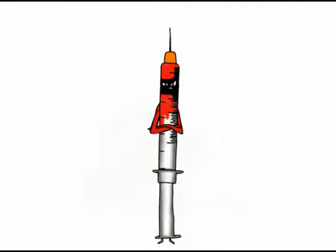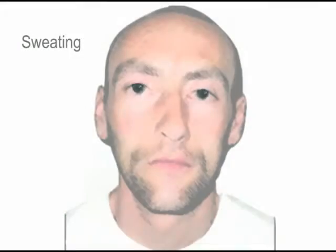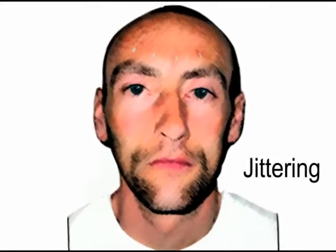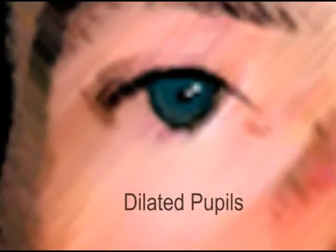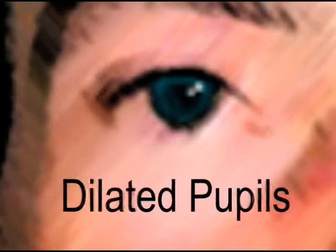Chemical endorphins are drugs that stimulate the body just like endorphins do, but are not made within your body. Chemical endorphins are considered opiates. The most popular opiates are morphine, heroin, and cocaine. Opiates have an addictive effect on the body, causing withdrawal symptoms, unlike natural endorphins.